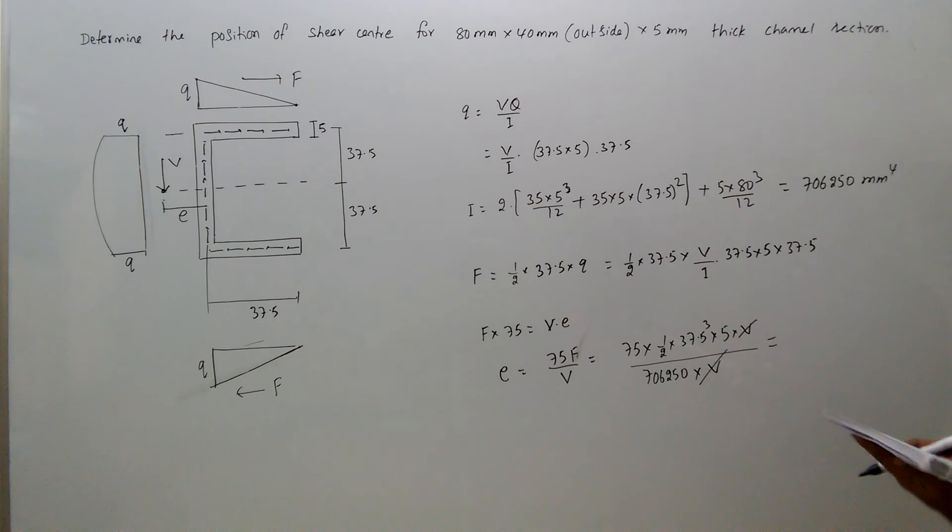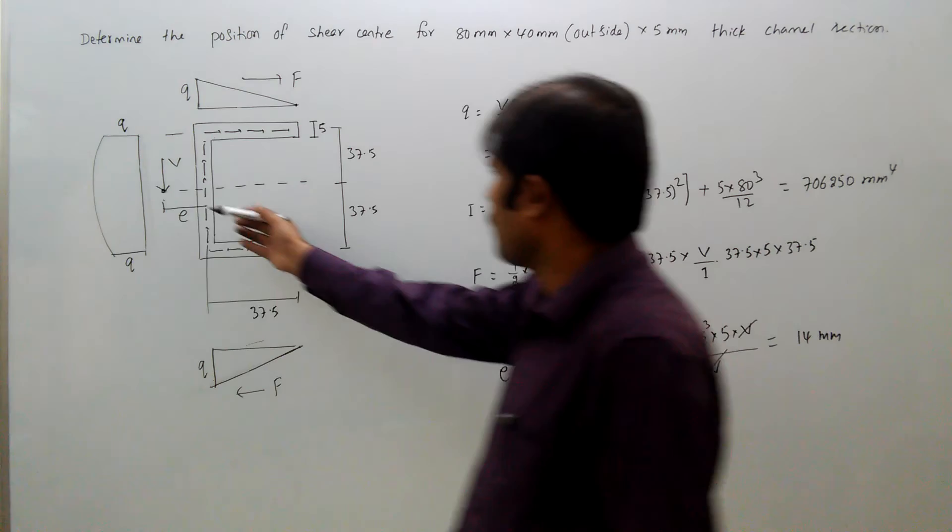e will be 14mm. This comes out as 14mm. So our shear center, this e is 14mm, so that there will be no twisting, only bending if V is acting at the shear center.